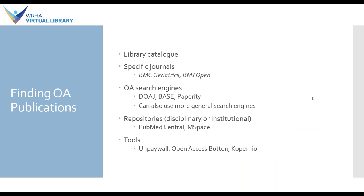Now that we understand a little bit about what open access is, let's talk about how you might find open access publications. Your first stop can be our library catalogue, accessible through our library's homepage — there's a big search box for you to search in. You can also look to specific journals; if you know of an open access journal in your area of interest you can search directly in that journal. There are also hybrid journals, which have some resources under traditional copyright requiring a subscription and some where an open access version of the article is available without subscribing.